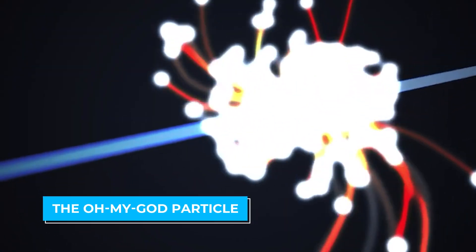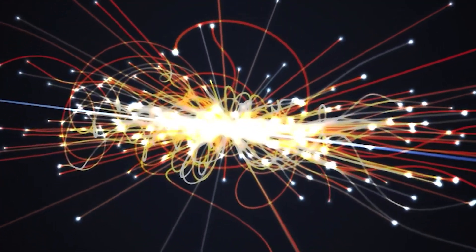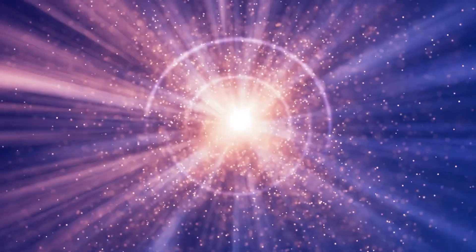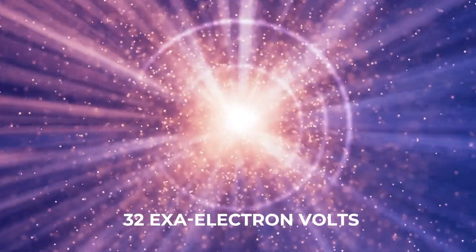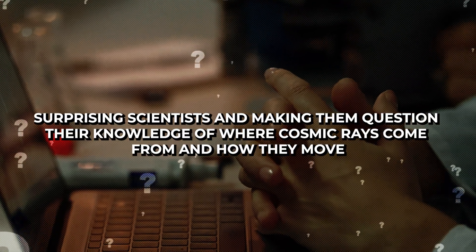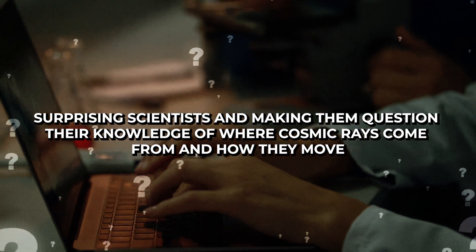The Oh My God particle, found in Utah in 1991, is the most powerful cosmic ray ever seen, even until 2023. It had a super high energy level of 32 exa-electron volts, surprising scientists and making them question their knowledge of where cosmic rays come from and how they move.